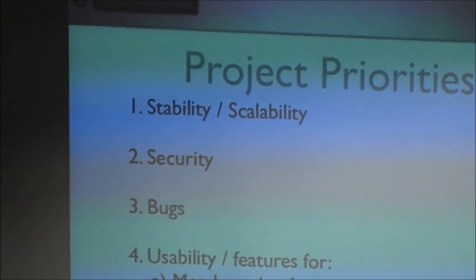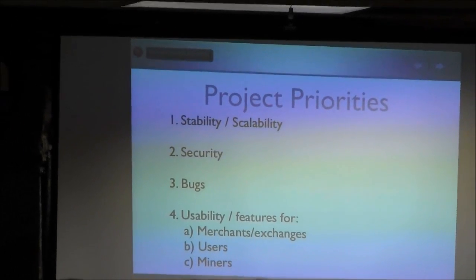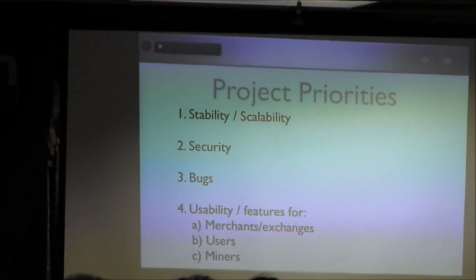In my view, the priorities for core Bitcoin are: first, stability and scalability — making sure the system keeps chugging along processing transactions even as hundreds of thousands of new people join every month. Second is security, both of the core system and everybody's wallets. Third is bugs — making sure things are relatively bug-free. And down at the bottom of my list are usability and new features.